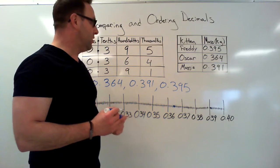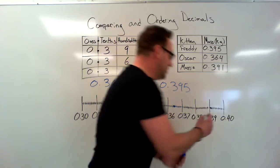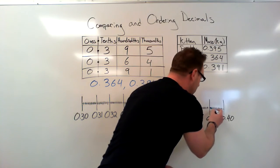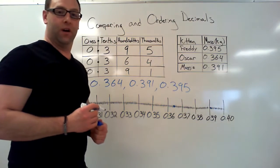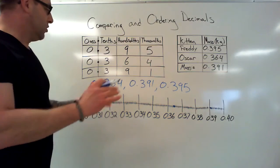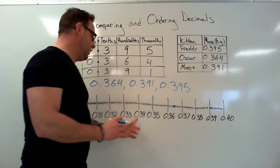Okay, zero point three nine five, we just count up four more, and zero point three nine five is there.